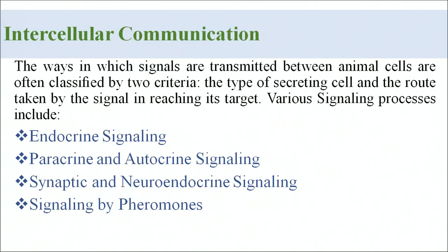Because hormones are secretions that form a communication system, there are a number of signaling systems that can function. These include endocrine signaling, paracrine signaling, autocrine signaling, synaptic and neuroendocrine signaling, and signaling by pheromones. We will go through each one of these.